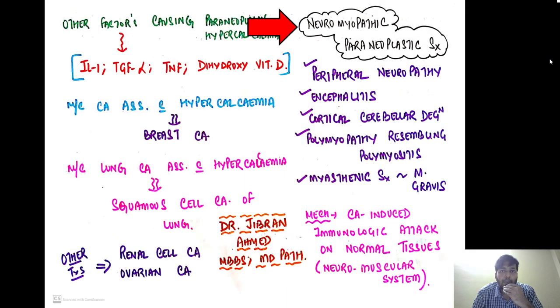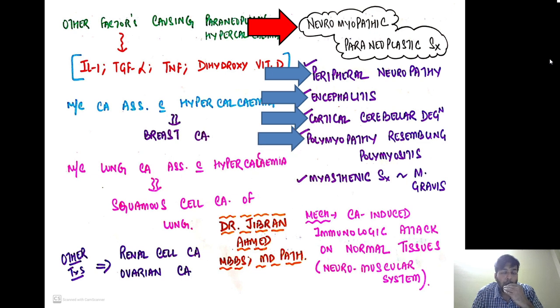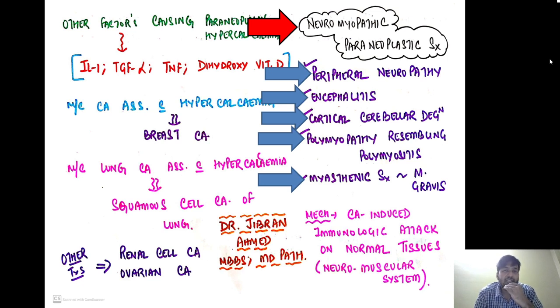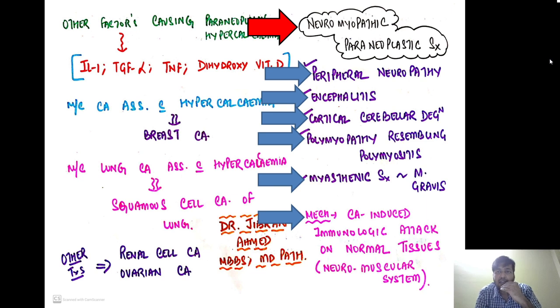The second category is neuromyopathic paraneoplastic syndrome. Patients present with peripheral neuropathy, encephalitis, cortical cerebellar degeneration, polymyopathy resembling polymyositis, or a myasthenic syndrome resembling myasthenia gravis. The underlying mechanism is a cancer-induced immunological attack on normal nerve and muscle tissue — the cancer induces formation of antibodies that attack the neuromuscular system.